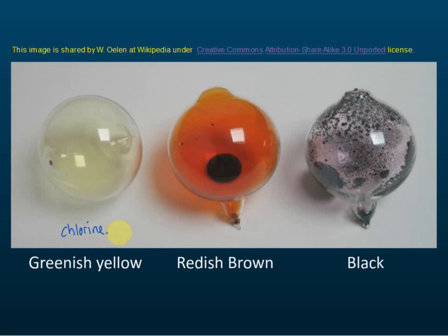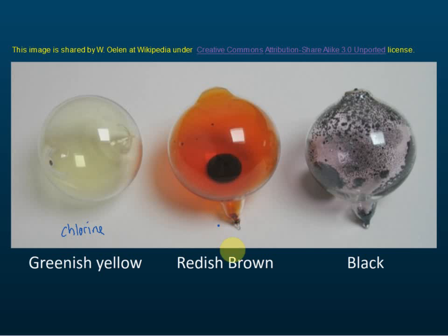The second one is bromine. The color of bromine is reddish brown — some say it's just brown, but it looks red, so we call it reddish brown.